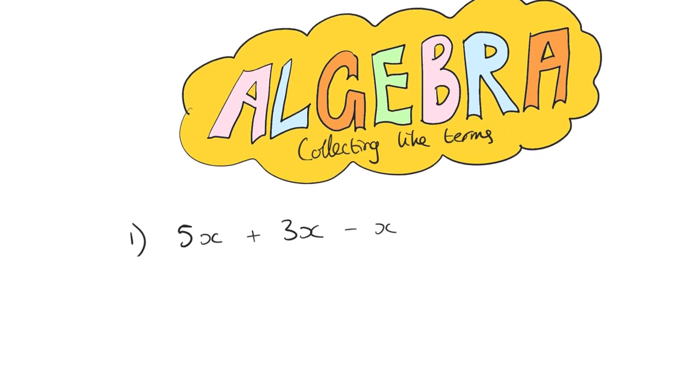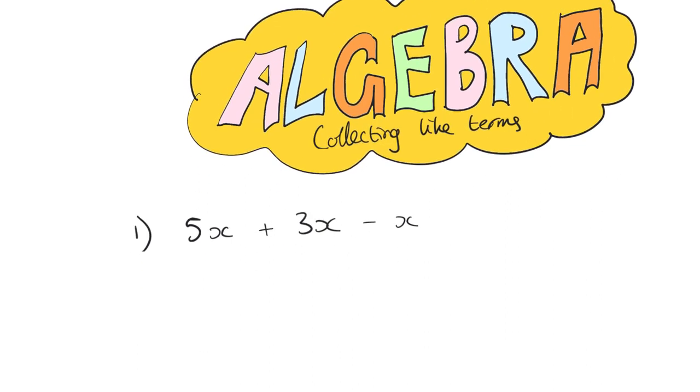Now, what that means, if we look at this first example, all of these are like terms. They have the same variable, which just means letter, and the same power. So they're all to the power of 1. You can imagine there's little 1s up there. So they're all like terms.